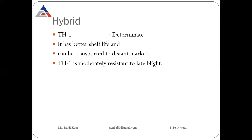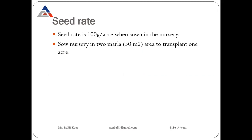You have to keep in mind the characteristics of each variety. Now seed rate: if we want to grow tomatoes in 1 acre, we require only 100 grams of seed. That seed will be sown in the nursery first and then the seedlings will be transplanted in the main field. So 100 grams of seed is required to transplant in 1 acre.